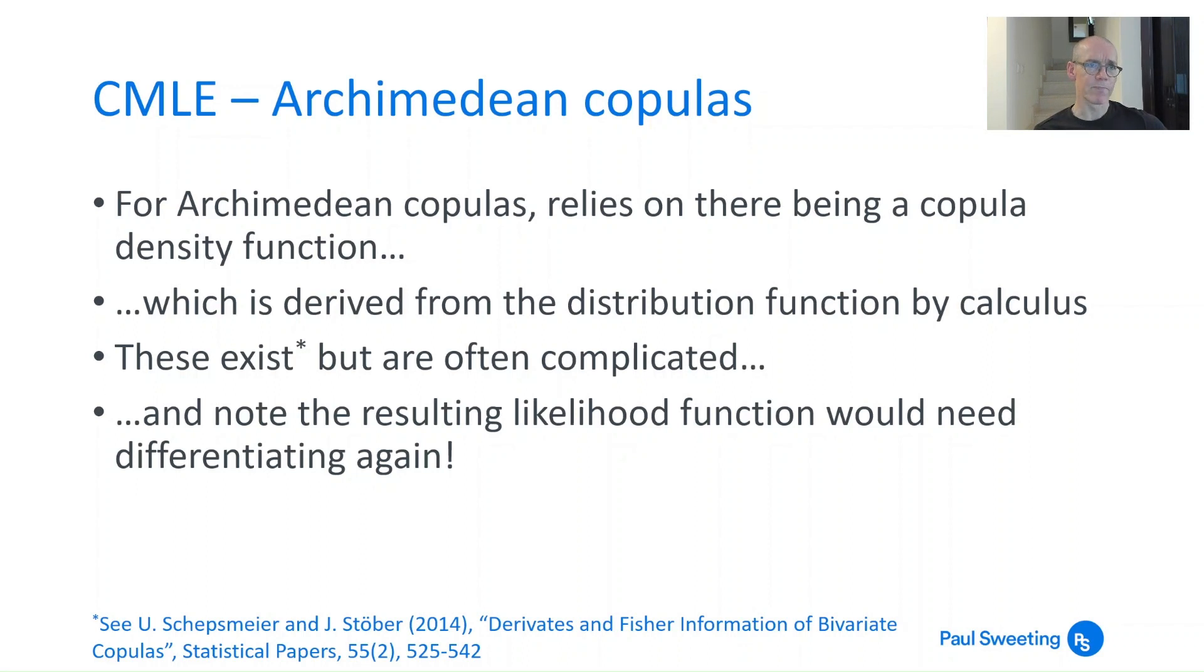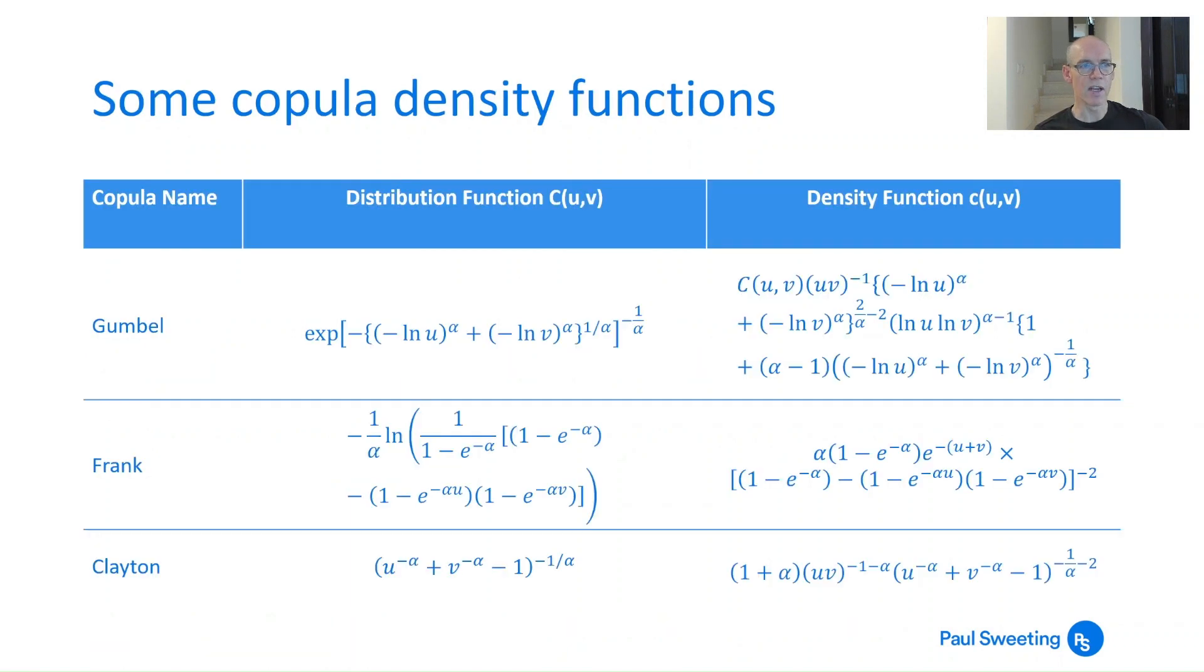For Archimedean copulas, you can use the same approach, but this relies on there being a copula density function derived from the distribution function by calculus. These exist, but they are often complicated, and even though they're complicated, you have to differentiate them again in the log likelihood function. The distribution function in the second column, even for anything apart from Clayton, is a bit of a handful. The Frank distribution function is not particularly pretty, but when you get to the Gumbel density function—anything which runs over three lines as an equation is not going to be the easiest thing to work with. The density function of the Gumbel actually starts off with multiplying all this by the distribution function as well. So they exist, but it's not going to be particularly easy.